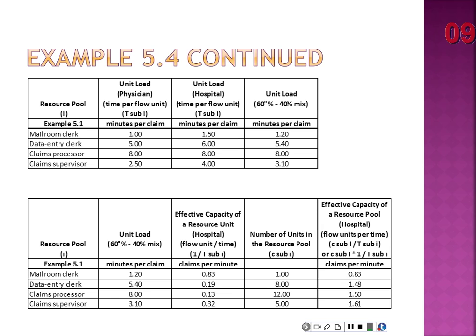So the artificial unit load for a mailroom clerk is 1.2 minutes per claim. You do the same all the way down: 5 × 60% + 6 × 40% = 5.4, and so on. Then it's the exact same process as Thursday — plug the artificial unit load into the table, take the inverse to get effective capacity: 1/1.2 = 0.83, 1/5.4 = 0.19, 1/8 = 0.13, 1/3.1 = 0.32. Then multiply by the number of resources to get effective capacity of the resource pool.